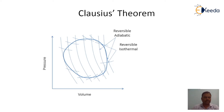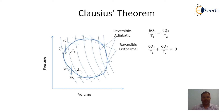Let us consider a small elemental cycle A, B, C, D in which δQ₁ amount of heat is supplied at temperature T₁ and δQ₂ amount of heat is rejected at temperature T₂. By applying Carnot theorem to this elemental cycle, we get δQ₁/T₁ = δQ₂/T₂. This equation can be rearranged to give δQ₁/T₁ + δQ₂/T₂ = 0.